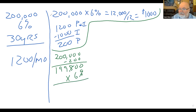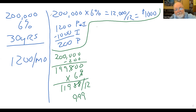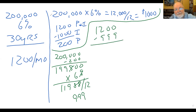$199,800 times 6% equals $11,988 for the year. Divide that by 12 — I need one month — that's $999. So we have interest for the month of $999. I'm still paying my $1,200 minus $999, which means $201 is going to principal.